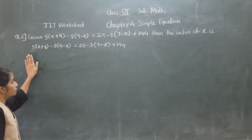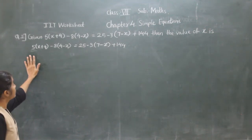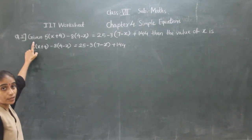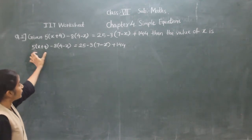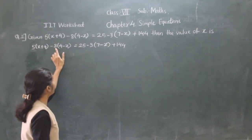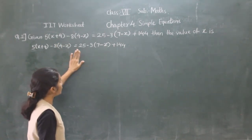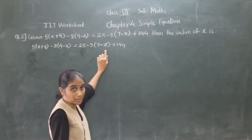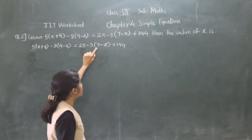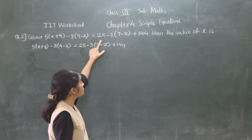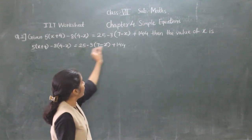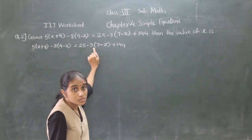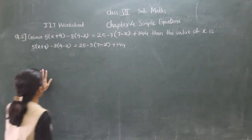Let's write down this equation: 5(x + 4) minus 8(4 minus x) is equal to 25 minus 3(7 minus x) plus 144. Now observe: 5 is multiplied for this bracket, so first we need to multiply 5 to this whole bracket. Similarly 8 is multiplied for this bracket. On the right side, you are not allowed to directly do 25 minus 3, because 3 is multiplied for the whole bracket. First multiply 3 to that bracket.